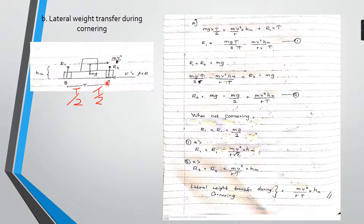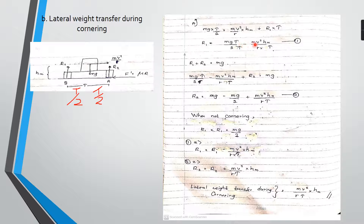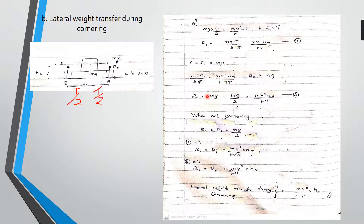The centrifugal force multiplied by the height hm, plus R1 multiplied by the track width t — when we solve for R1 we get: R1 = mg·t/2t minus mv²·hm divided by r·t. We also know that R1 plus R2 equals mg, because in the vertical direction we only have R1, R2, and mg.